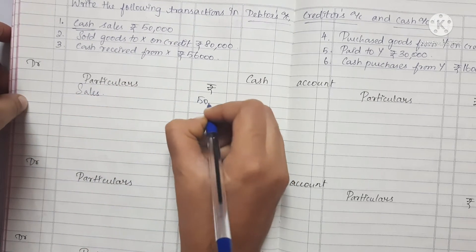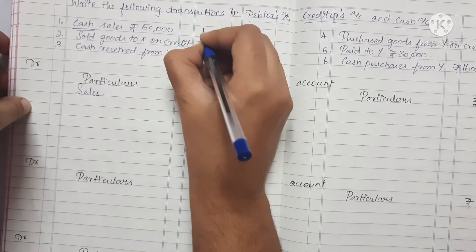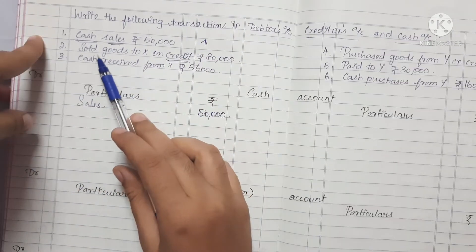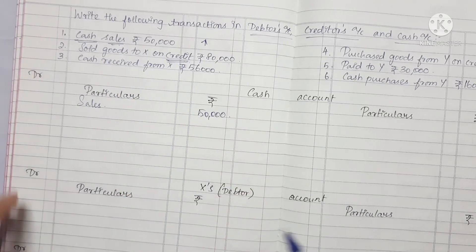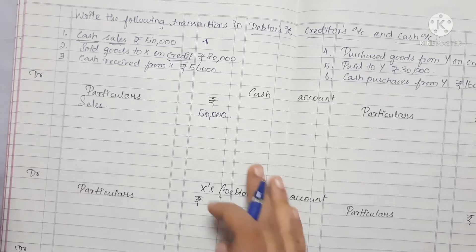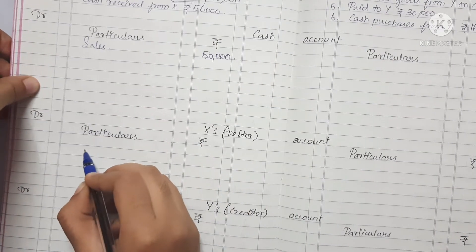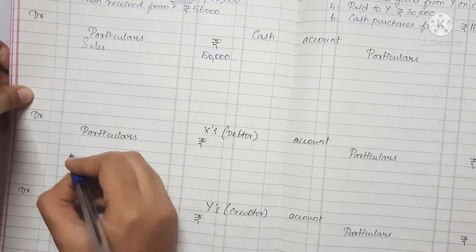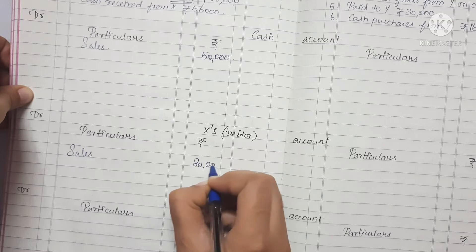First transaction: Cash Sales, Rs. 50,000. Cash increases on the Debit side. Second transaction: Sold goods to X on credit, Rs. 80,000. We sell on credit — how do we record this? We record it in the Debtors account. Sales is Rs. 80,000.